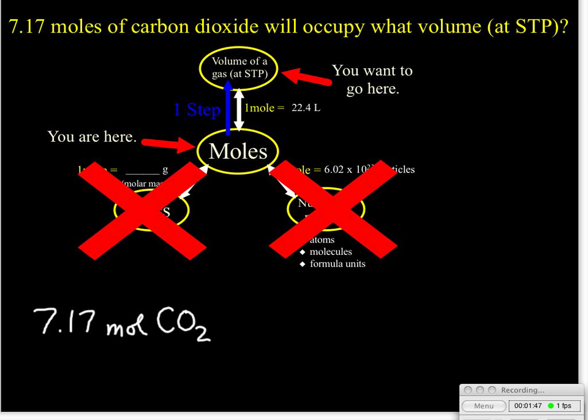So knowing this, we can set up our dimensional analysis. We are starting with 7.17 moles of carbon dioxide. We want to know how many liters. And we know that this is only going to take one step, so I'm just going to put space for one dimensional analysis conversion factor. We need to get rid of units of moles, because we only want liters in our answer, so we'll put our moles on the bottom, and we'll put our liters on top, since we know the relationship between moles and liters. The moles get the one. The liters get the 22.4, because that's our conversion factor.